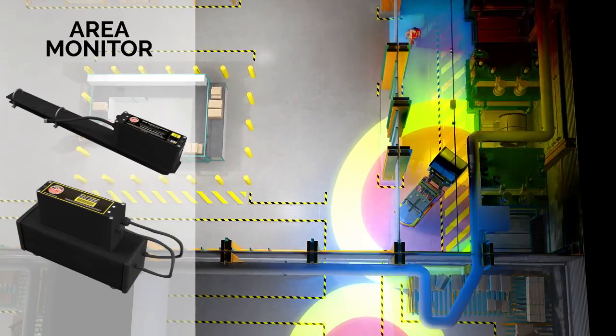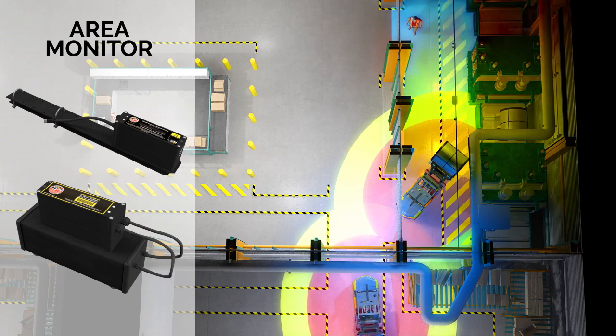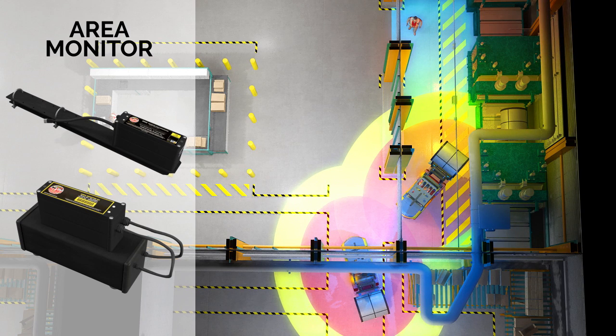The area monitor alerts the presence of mobile equipment by turning on lights or other signals. In this example, as the mobile equipment is exiting the pathway, a blue light provides the alert to other personnel and mobile equipment.